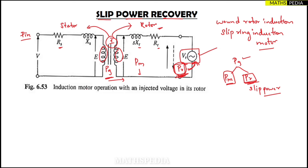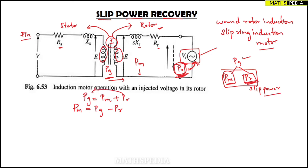The key equation is: PG = PM + PR. Rearranging, PM = PG − PR. This is the very important equation we will use to discuss all the cases.